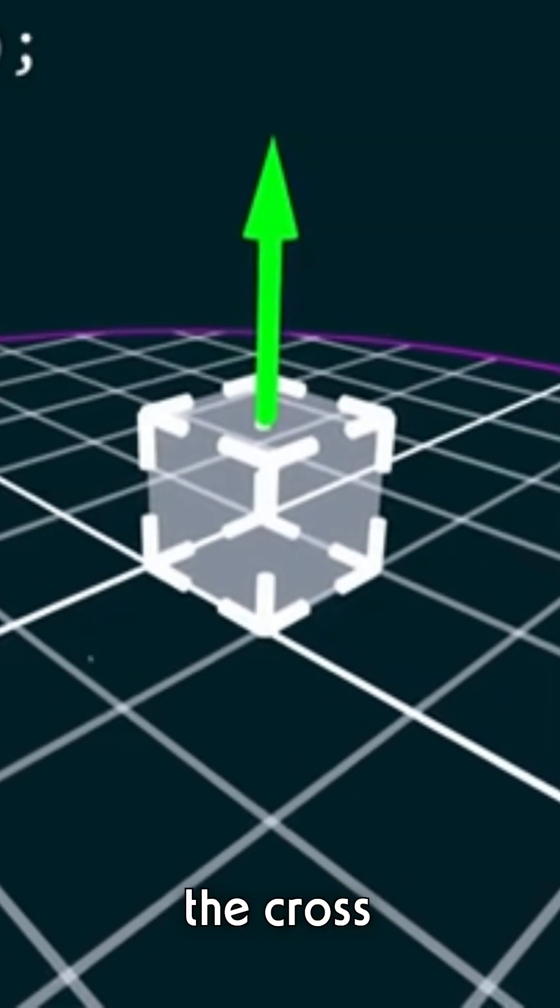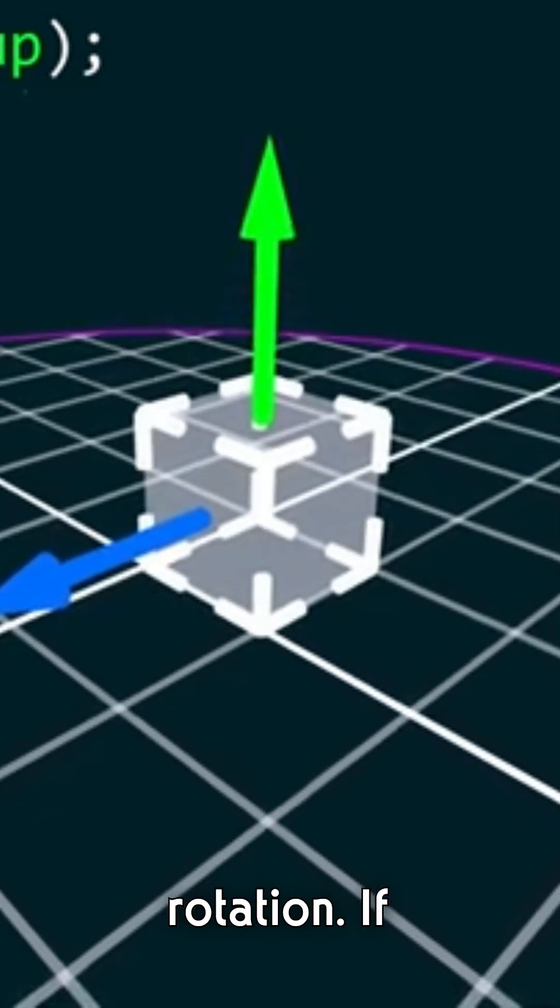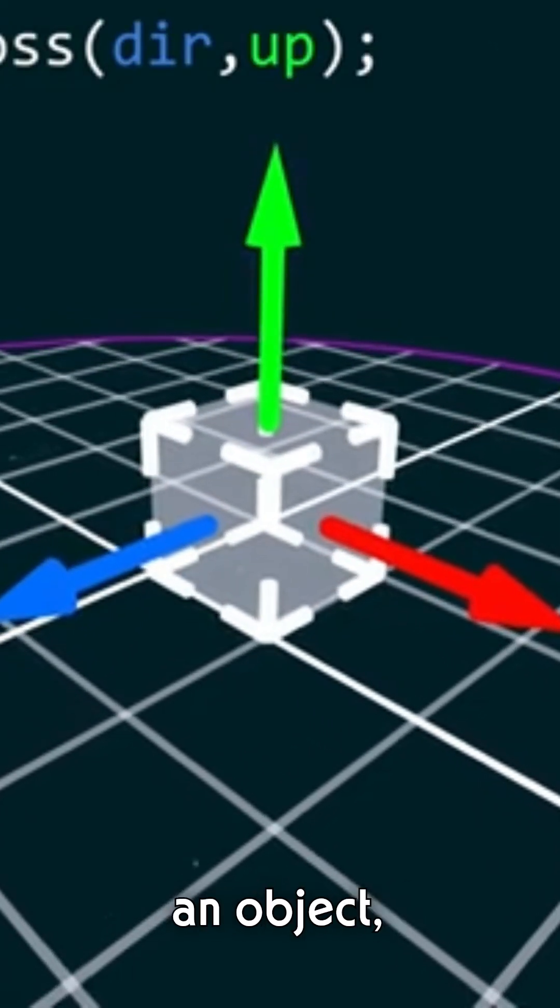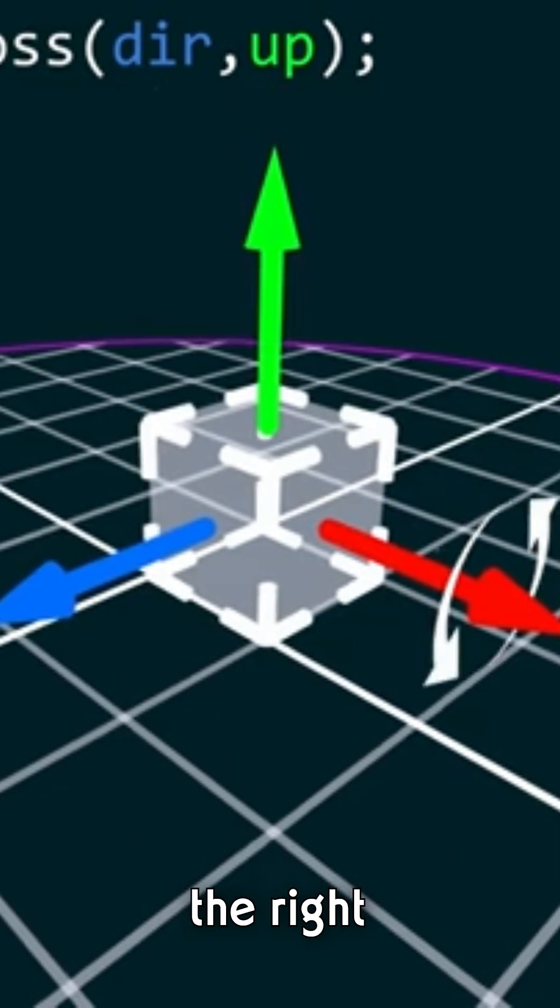In game development, the cross product helps calculate the axis of rotation. If you take the forward and up directions of an object, their cross product gives the right direction for rotation.